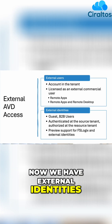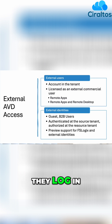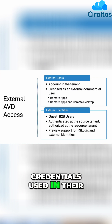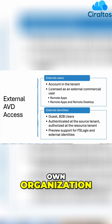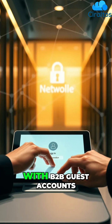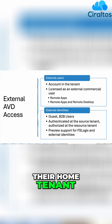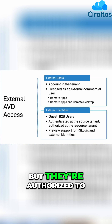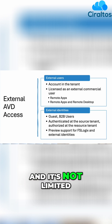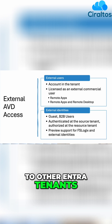Then we have external identities — these are guest users invited to our tenant. They log in with the same credentials used in their own organization. That's what's called a B2B guest account. With B2B guest accounts, authentication happens in their home tenant, but they're authorized to access resources in ours. And it's not limited to other Entra tenants.